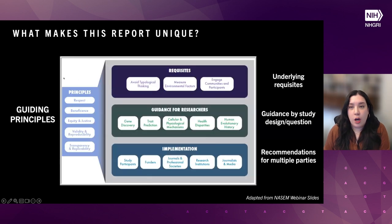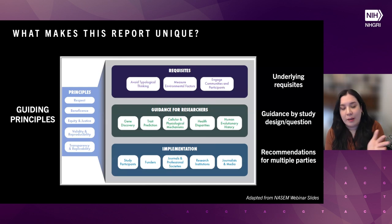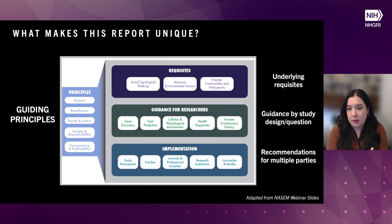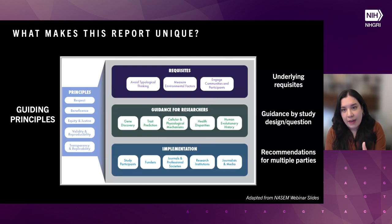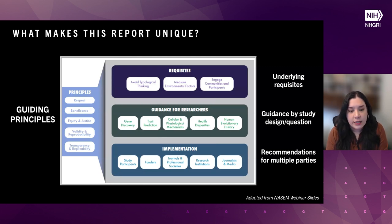There are six guiding principles that underlie the entire report: respect, beneficence, equity and justice, validity and reproducibility, and transparency and replicability. All requisites and recommendations are grounded by these guiding principles. Stemming from those, there are three requisites for sustained change: avoiding typological thinking, measuring environmental factors, and engaging communities. Separate guidance is provided for researchers in different kinds of research, with recommendations for implementation for the multiple parties involved in the system.